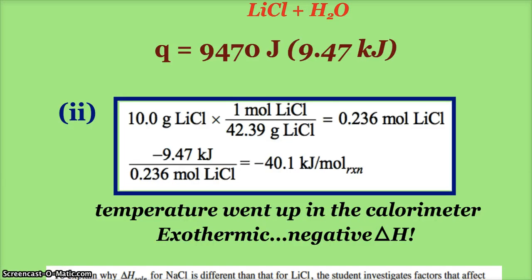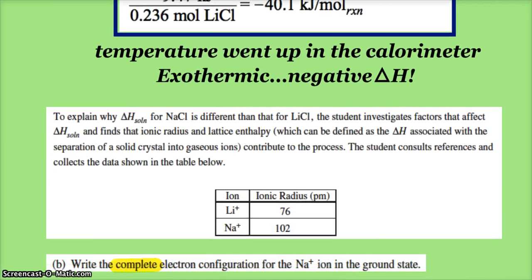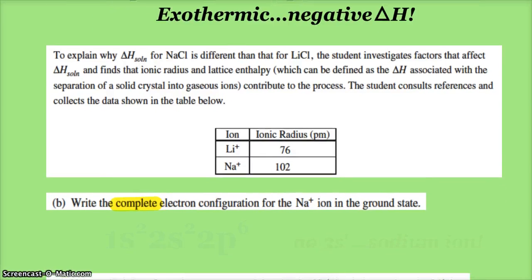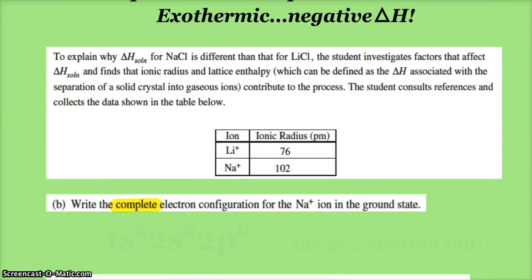Now, to explain why the delta H for sodium chloride is different than lithium chloride, the student investigates factors and finds that ionic radii and lattice enthalpy, the delta H associated with separating the solid crystal into gaseous ions, both contribute to the process. Here we see our ionic radii in picometers, and you can see the sodium ion is larger than the lithium ion.